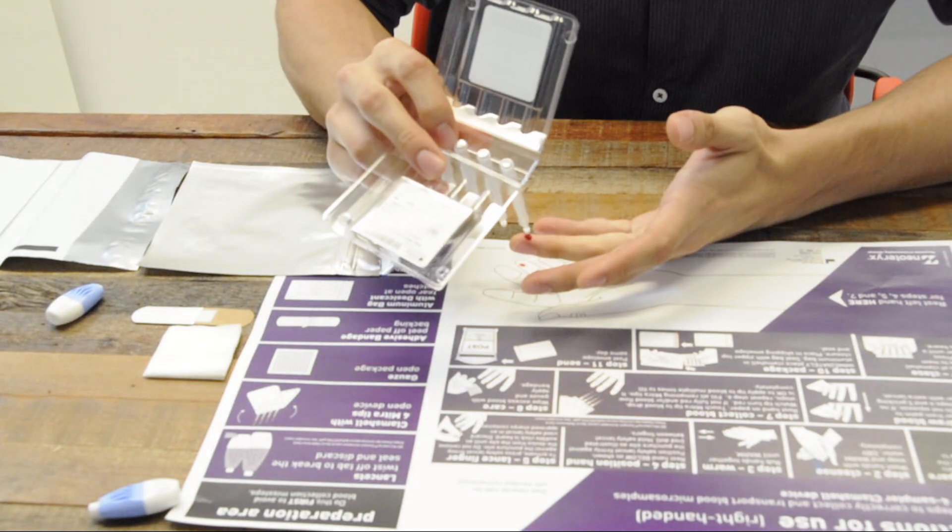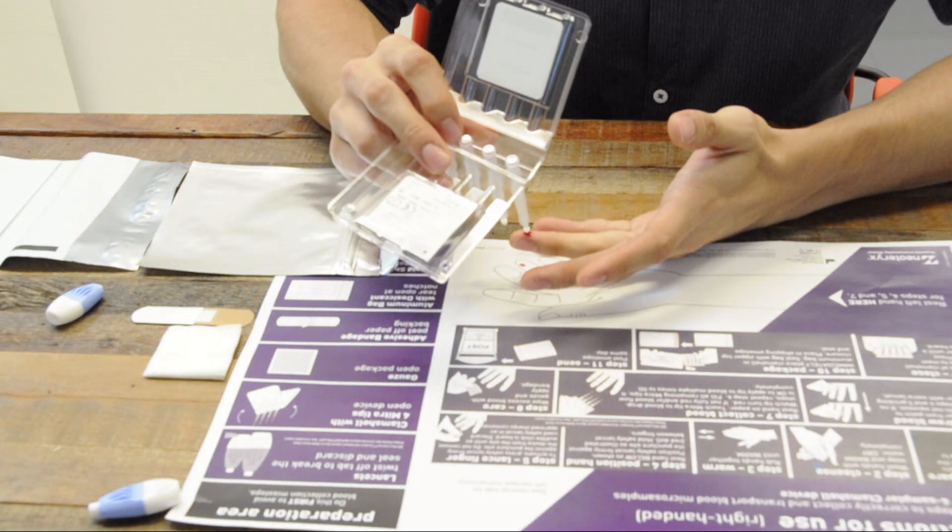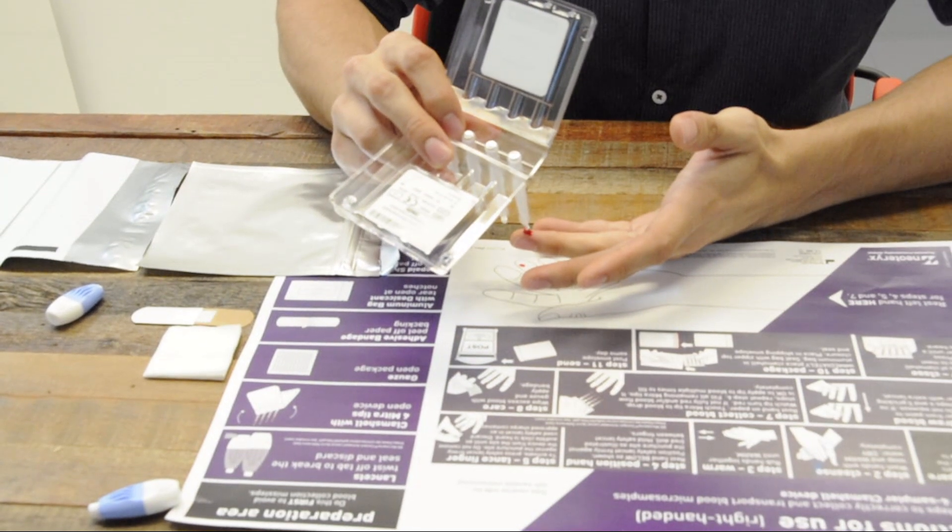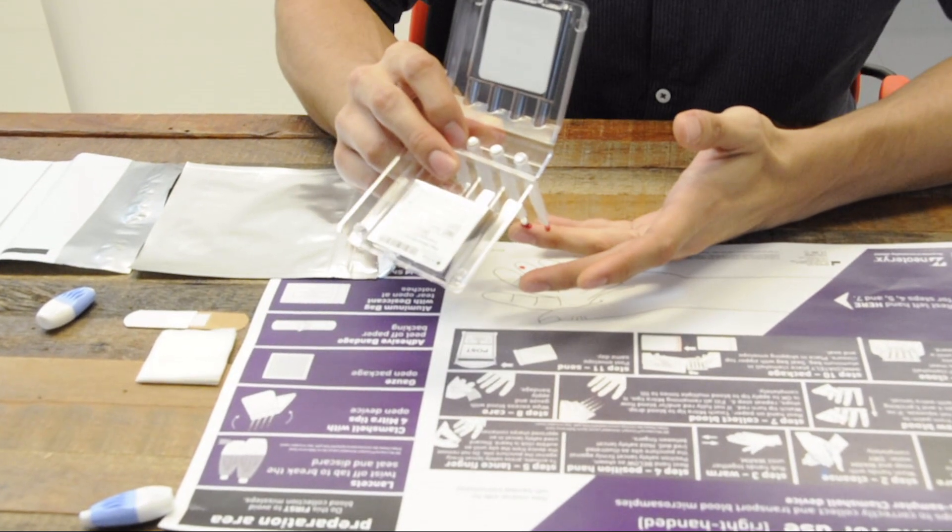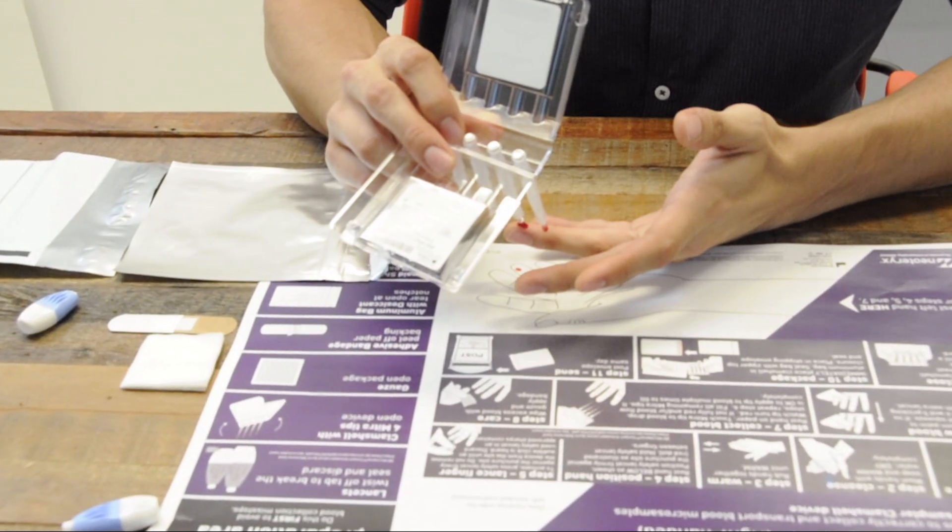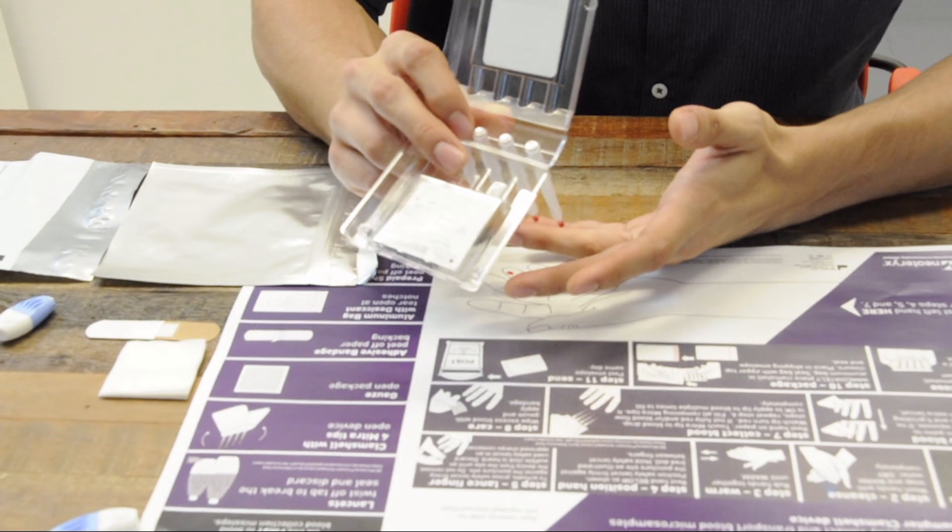When the blood appears, hold the mitra tip against the drop of blood until the tip turns red. Keep applying the tip to the blood until it is filled completely and do this with all four tips.